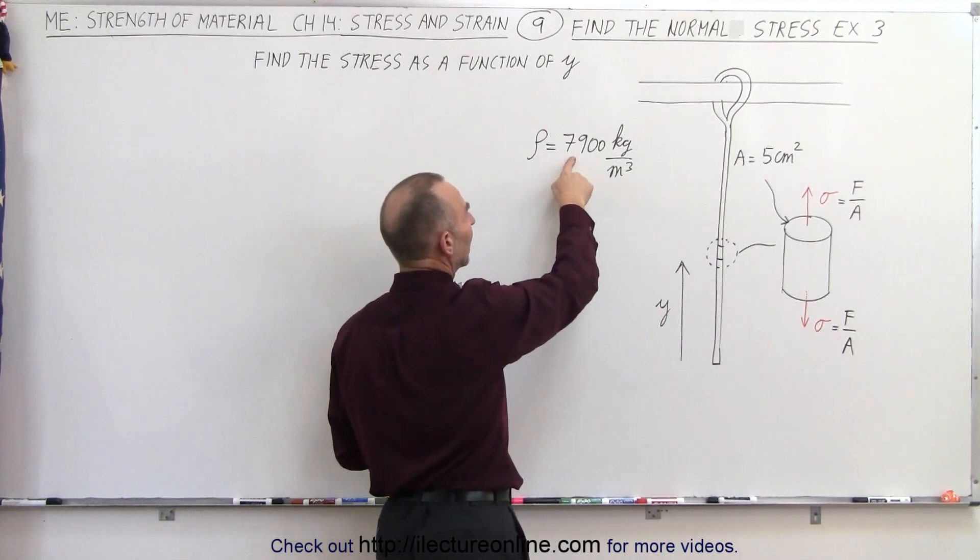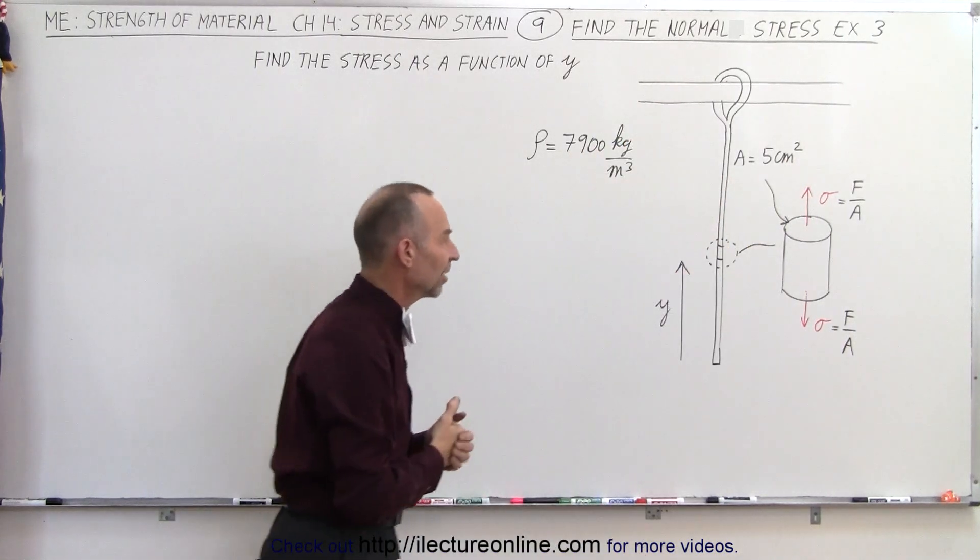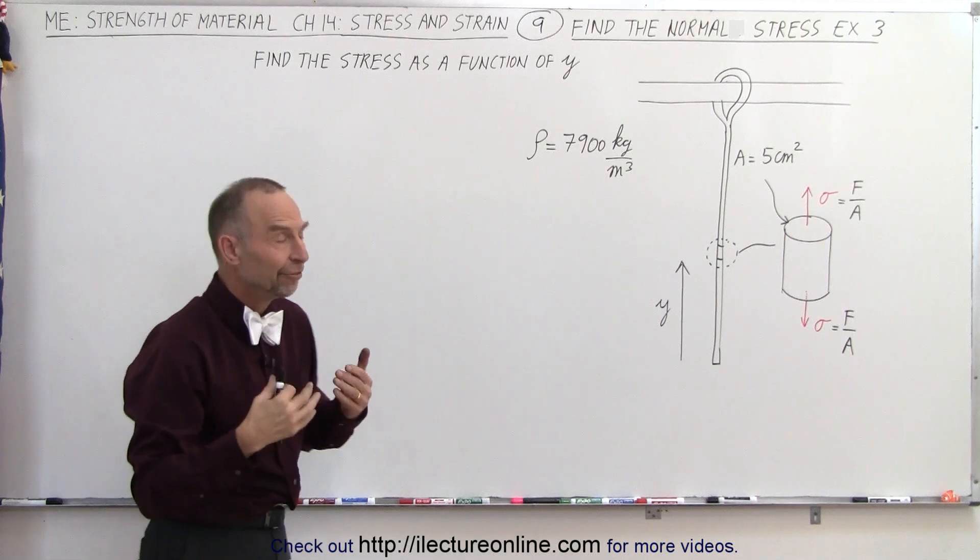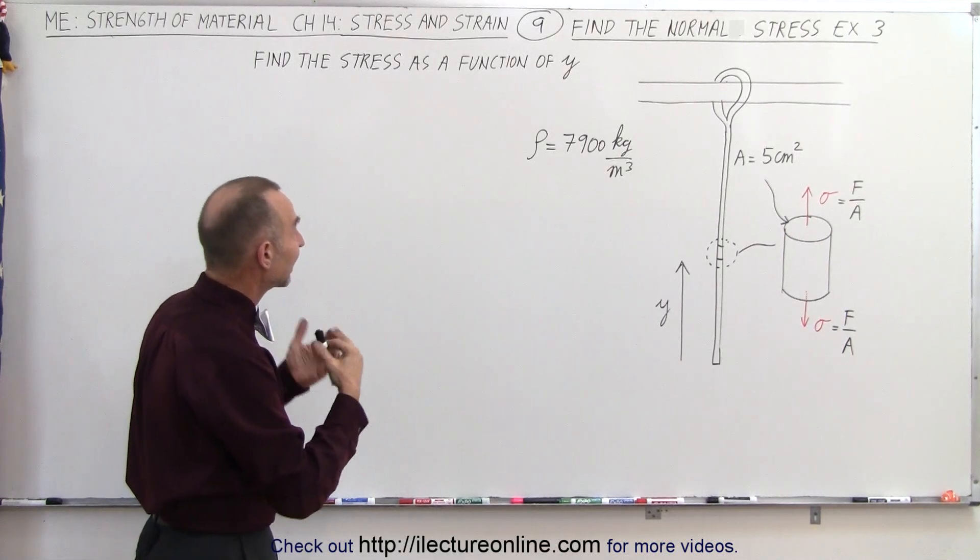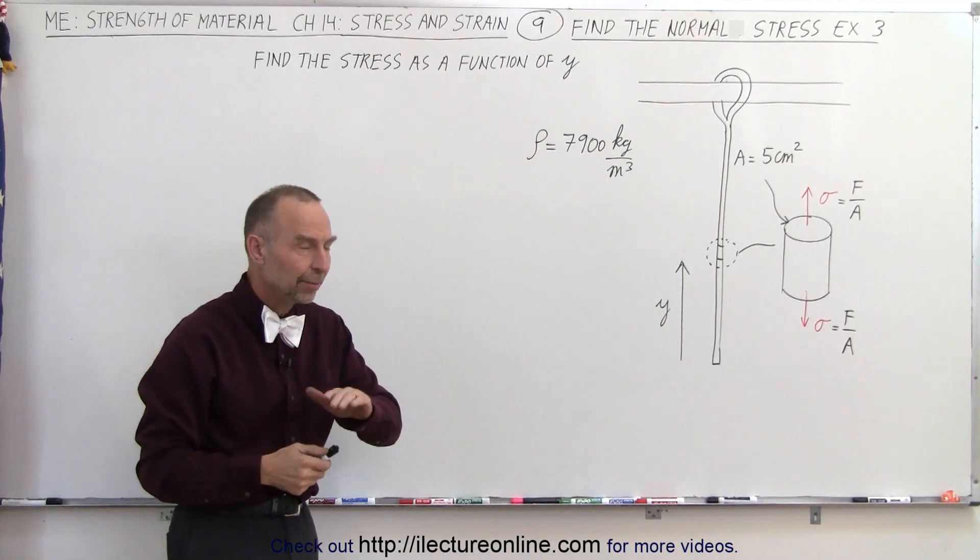Notice that the density of the cable is 7900 kilograms per cubic meter, and the cross-sectional area is 5 centimeters squared. We're trying to find the stress in the cable as a function of y, the position above the bottom of the cable.